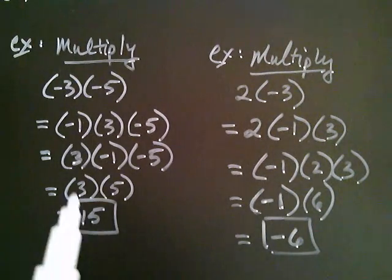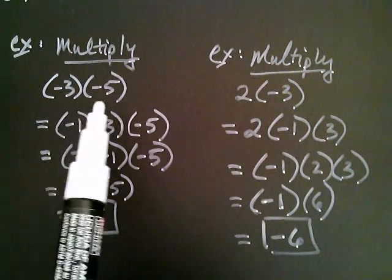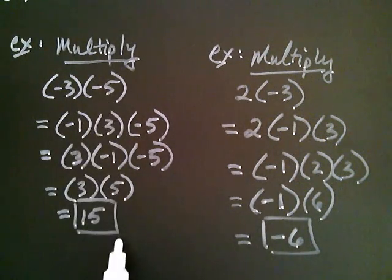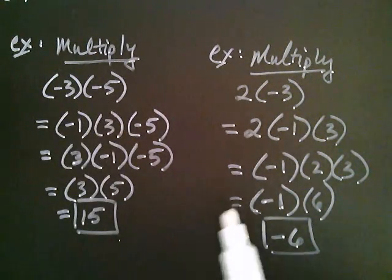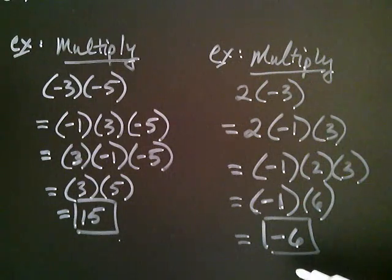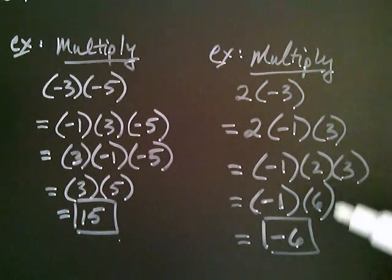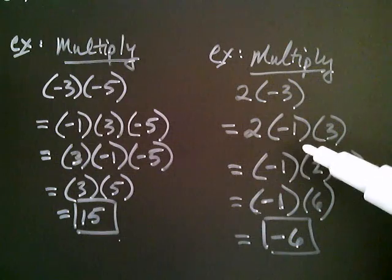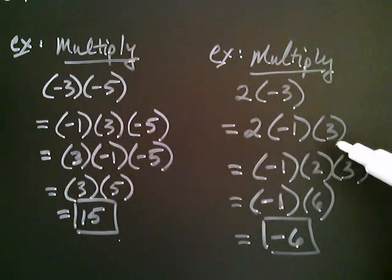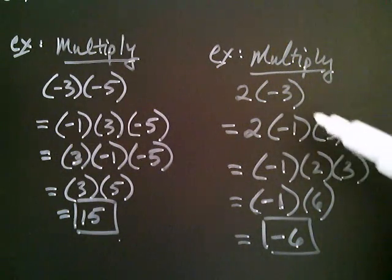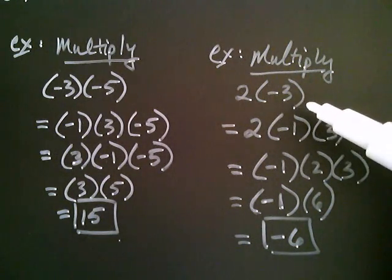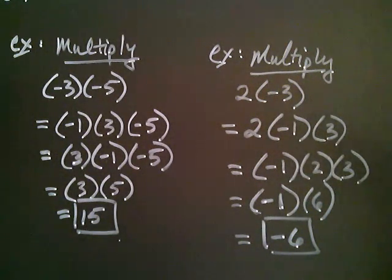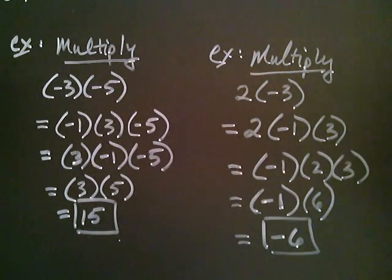I observed here that a negative times a negative is a positive, and over here that a positive times a negative is a negative. It all hinges on the interesting feature of negative one — that negative one times a number is always the negative of the number you're multiplying. And that's why a negative times a negative is a positive.